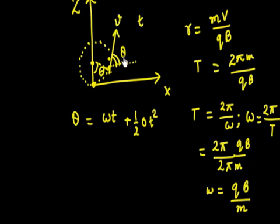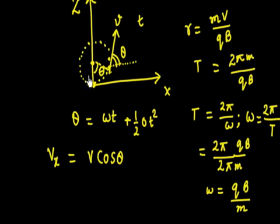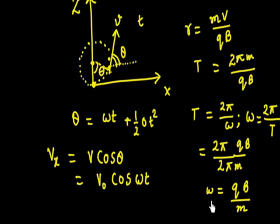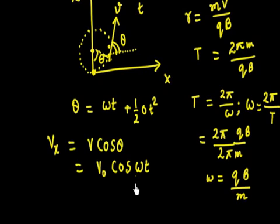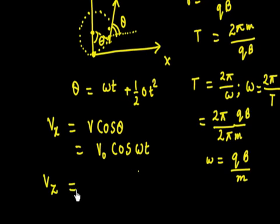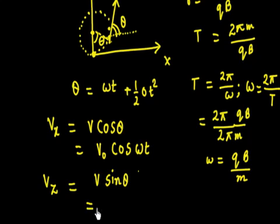With the velocity v making angle θ with the x-axis, we can resolve components. The x-component of velocity is vx = v·cosθ = v0·cos(ωt), since speed remains constant in circular motion. The z-component is vz = v·sinθ = v0·sin(ωt). So we know vx and vz as functions of time.